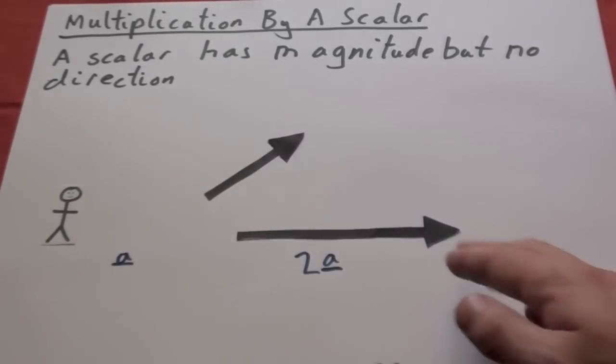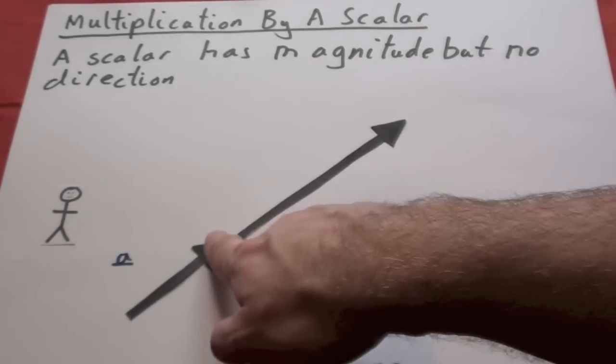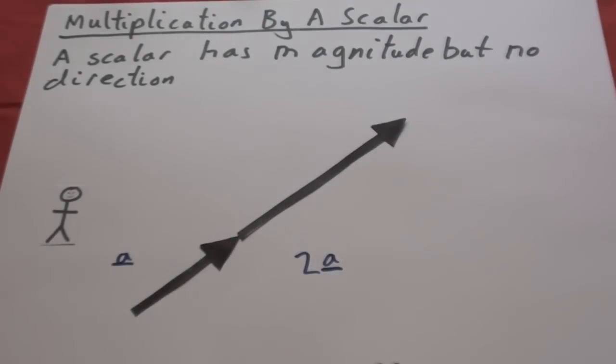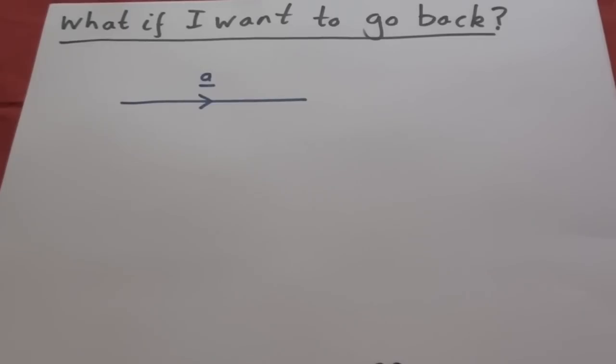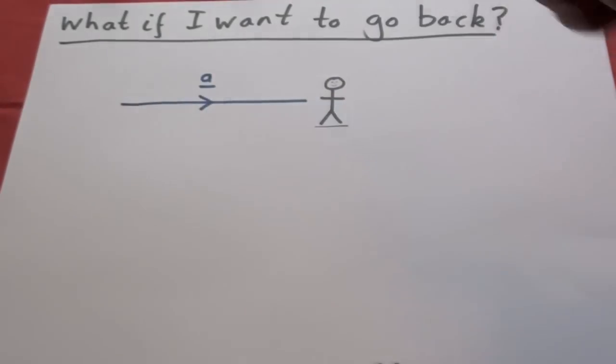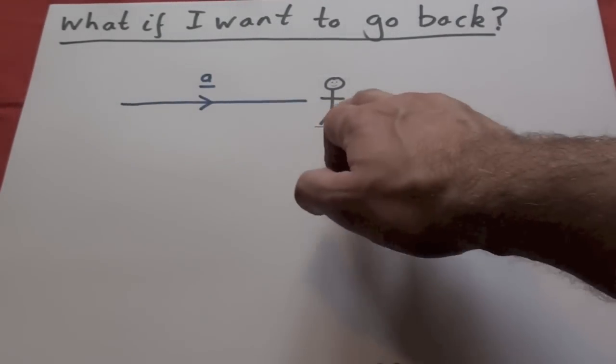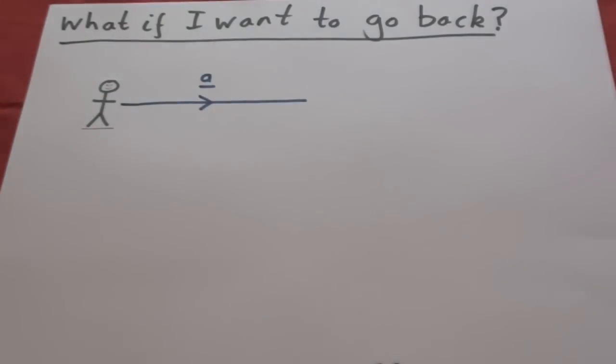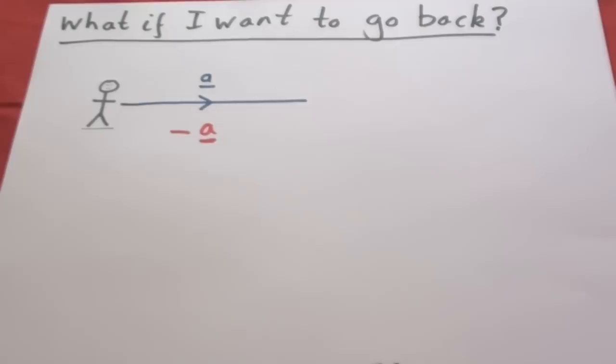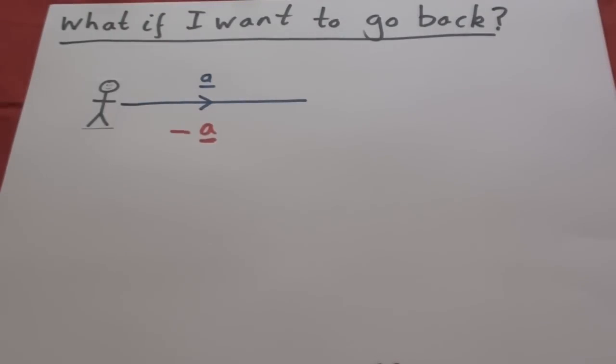These lines are parallel because they're in the same direction whether they are following on from each other or side by side. What if I want to go backwards though? So here's Monsieur Mathematique going in direction A. What if he wants to go the same distance but back in the same direction backwards? It's just minus A.